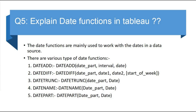DATEADD is used to add a specific value to a date. DATEDIFF is used to find out the difference between two dates. DATETRUNC — whenever we use DATETRUNC, we perform a truncate operation on a specific date and the function returns a new date.